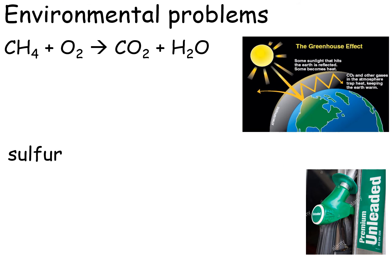There are two environmental problems you need to know related to the combustion of crude oil, and both are related to the products formed. One product is carbon dioxide — that is a greenhouse gas which contributes to the greenhouse effect. The earth is warmed up by the sun, radiates heat, and that heat can't escape because it's trapped in the atmosphere by greenhouse gases.